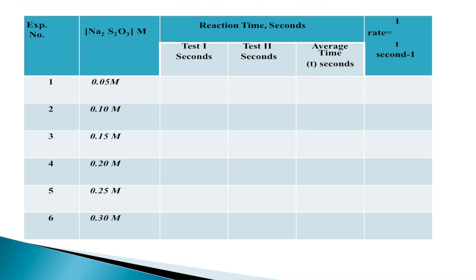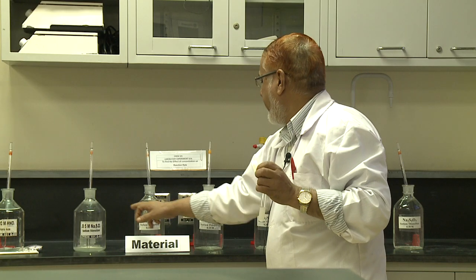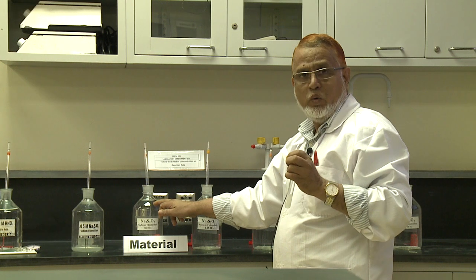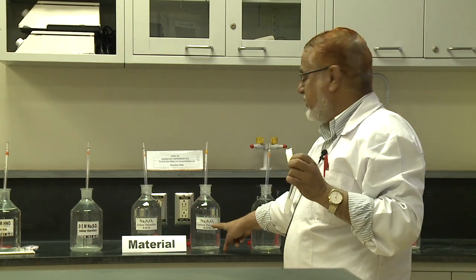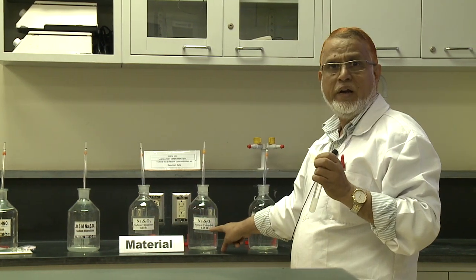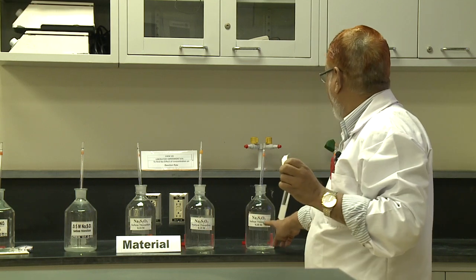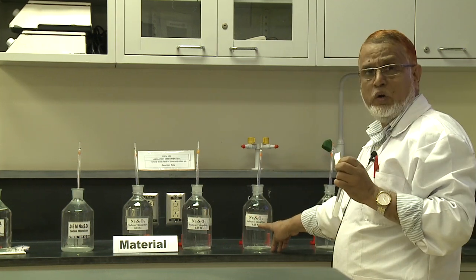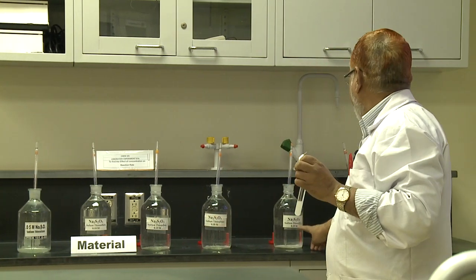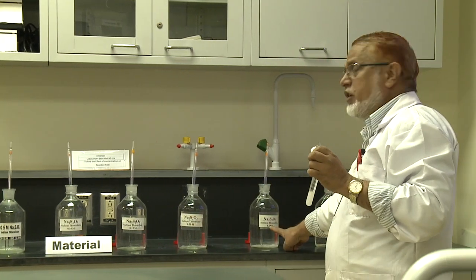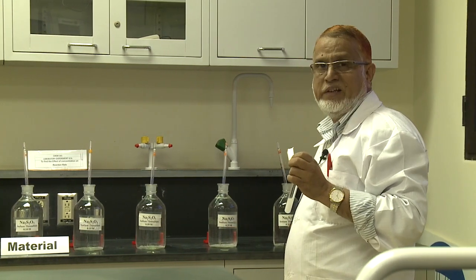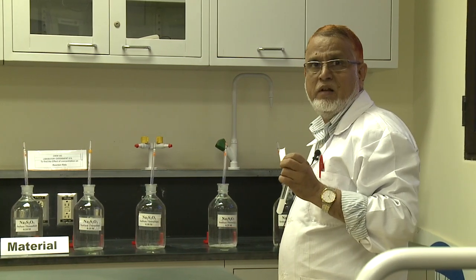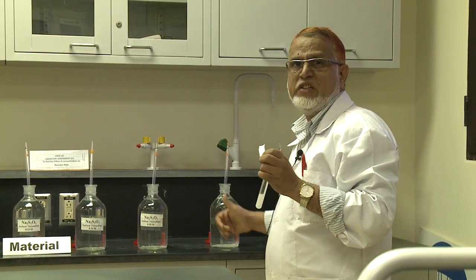With six different concentrations from 0.05 to 0.1 for the second reading, then 0.15 for the third, 0.2 for the fourth, 0.25 for the fifth, and 0.3 for the last one. So I get six readings for six different concentrations, giving six time values.